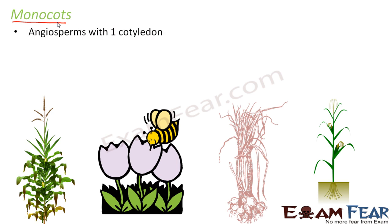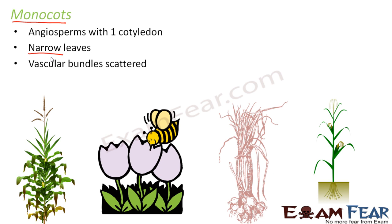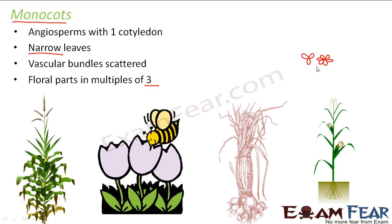Monocots are angiosperms with one cotyledon. They have comparatively narrow leaves. The vascular bundles are scattered, unlike dicots where they are in a ring. Floral parts are in multiples of three, so the flowers have three, six, or nine parts. Examples of monocots are corn, tulip, onion, and maize.